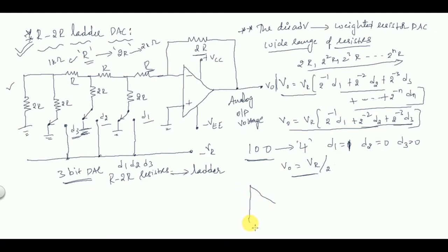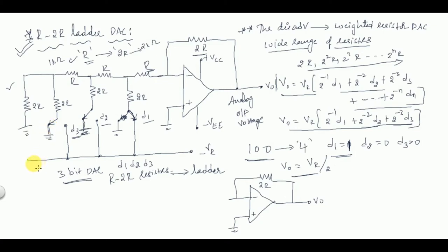For this input, how will the op-amp circuit look? The non-inverting terminal is grounded, and through the feedback path we have V0. There is a 2R resistor in the feedback. Since D1 = 1, D1 is connected to −Vr. The 2R resistor for D1 is connected to −Vr. The next resistor R is drawn as it is, and the 2R resistor for D2 is connected to ground.